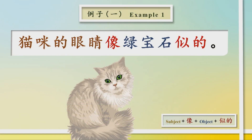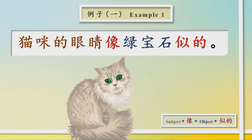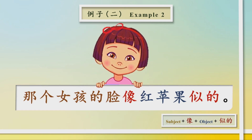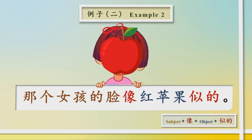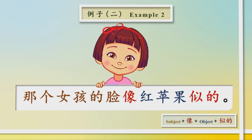栗子一：猫咪的眼睛像绿宝石似的。栗子二：The girl's face is like a red apple.